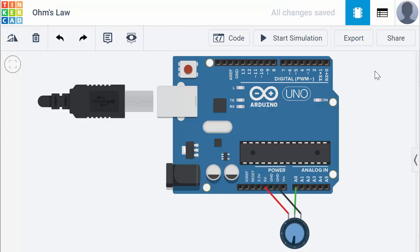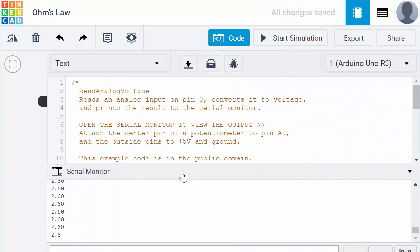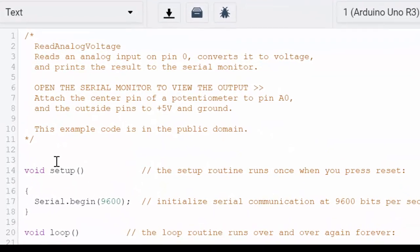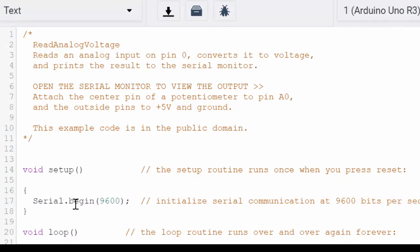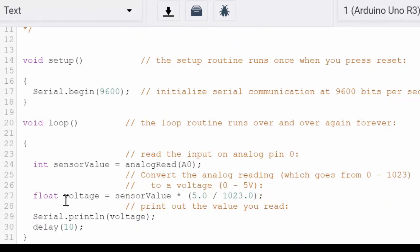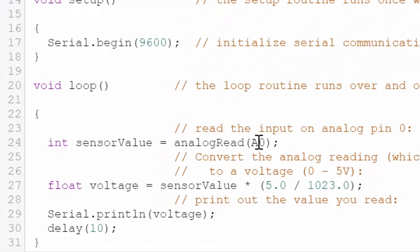So I'll use the Tinkercad to simulate this operation. First, let's take a look at the code. In the C programming, we see the initial setup where we're going to set up the serial port at 9600 baud so that we can look at the voltage that we're getting off of the wiper from the potentiometer. Then within the endless loop, we're going to read the analog value on analog input 0 and enter it into a variable integer called sensor value.